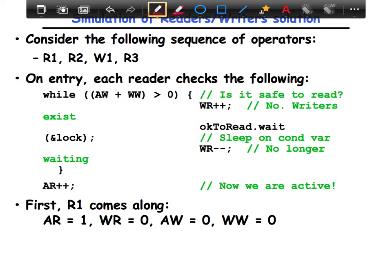So the first reader comes along, gets through the condition. There are obviously no writers in the system, so increments the active readers and starts accessing the database.